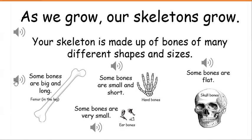Some bones are big and long, like the femur in the leg. Some bones are small and short, like your hand bones. Some bones are very small, like your ear bones. Some bones are flat, like skull bones.